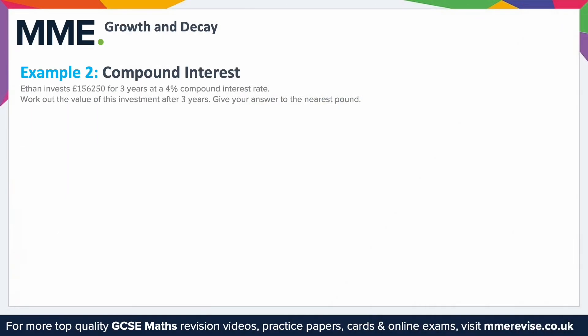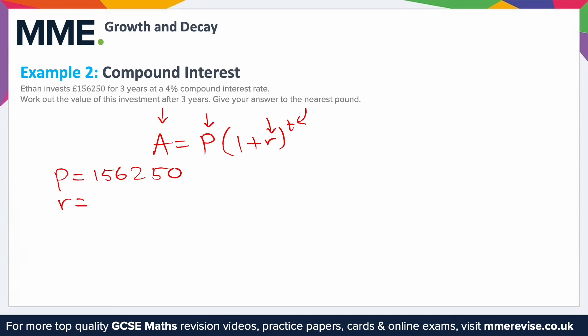Evan invests 156,250 pounds for three years at a four percent compound interest rate. Work out the value of this investment after three years, giving your answer to the nearest pound. Recall the equation for compound interest: A equals P times (1 plus r) to the power of t, where A is the final amount, P is the initial investment, r is the interest rate as a decimal — that's really important — and t is the time period.